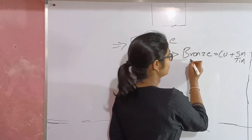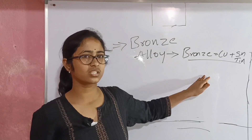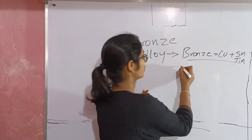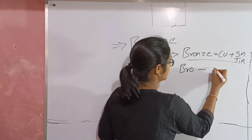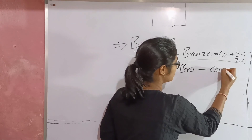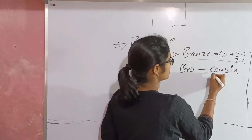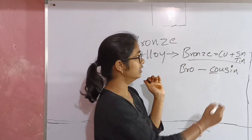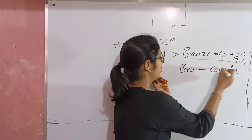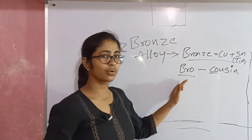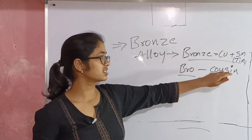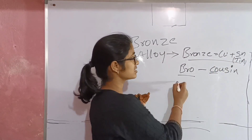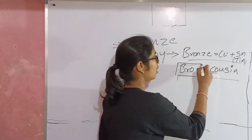Here is a simple code to remember the alloy. We will use a code: Bro is cousin. C-O is copper, S-I-N is tin. So Bro is bronze, CO is copper, SIN is tin. This is a symbol code to remember: bronze is made of copper and tin.